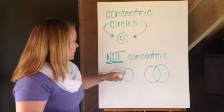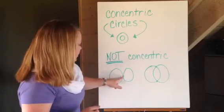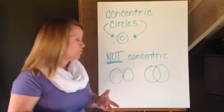So if I had two circles side by side, I know that kind of looks like eyeballs, doesn't it? They actually are touching at this point. So they are not concentric circles.